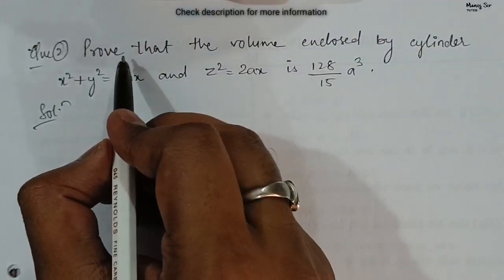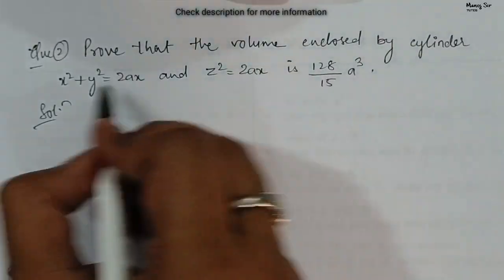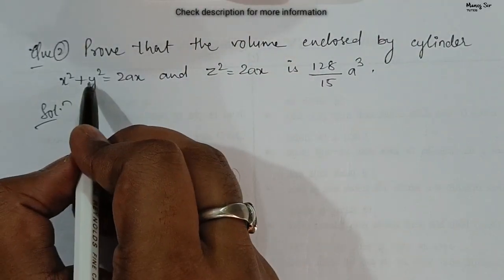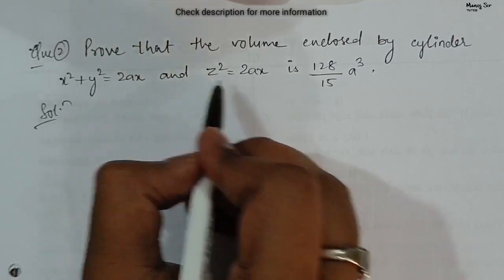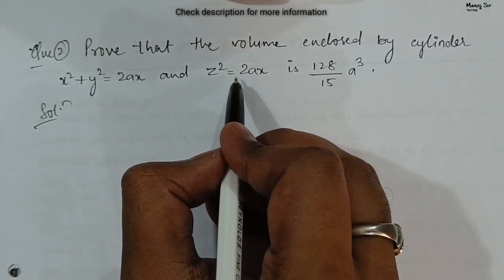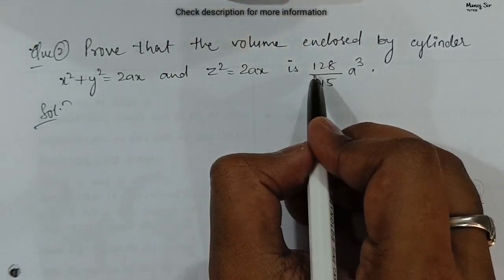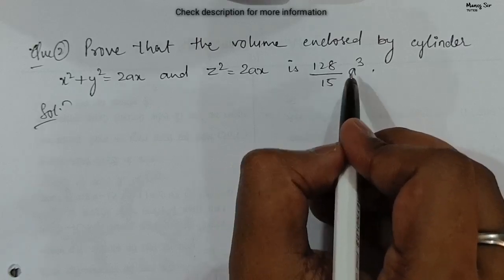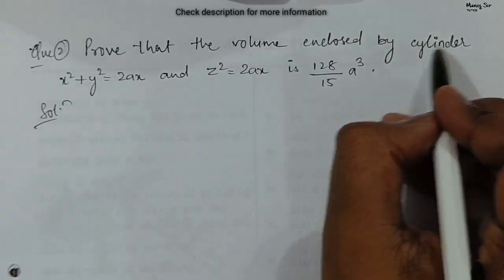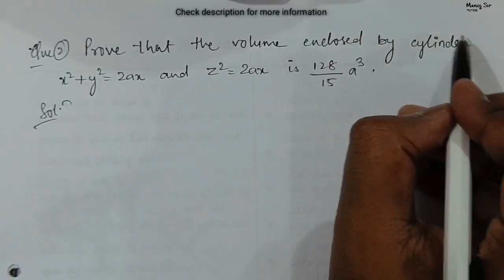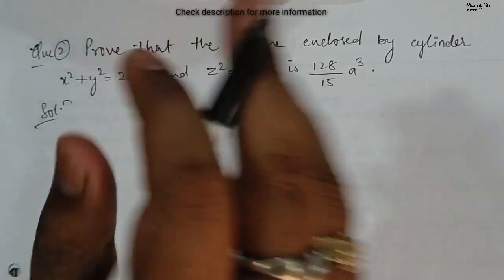The question says: prove that the volume enclosed by the cylinder x² + y² = 2ax and z² = 2ax is given by 128a³/15.